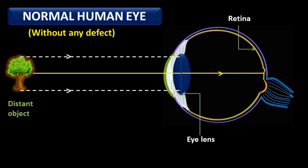These parallel rays coming from the distant object, after refraction, meet in a single point on focus. The eye lens is a converging lens, so after refraction, they converge light rays on the focus. The focus of a normal human eye lens is on the retina, so the image of the distant object is formed on the retina.